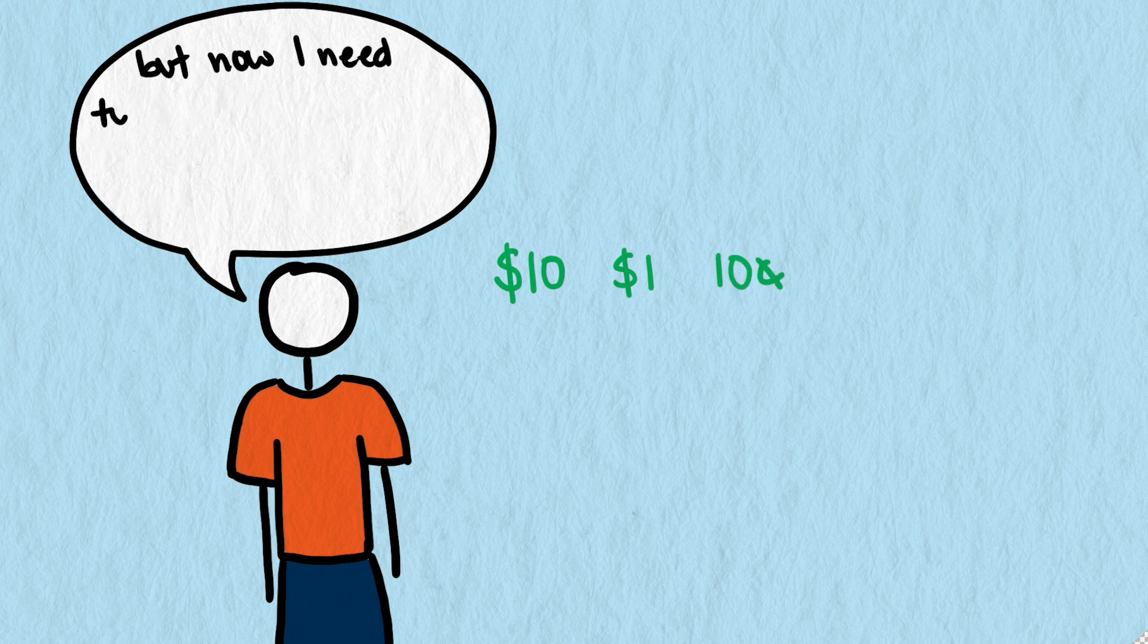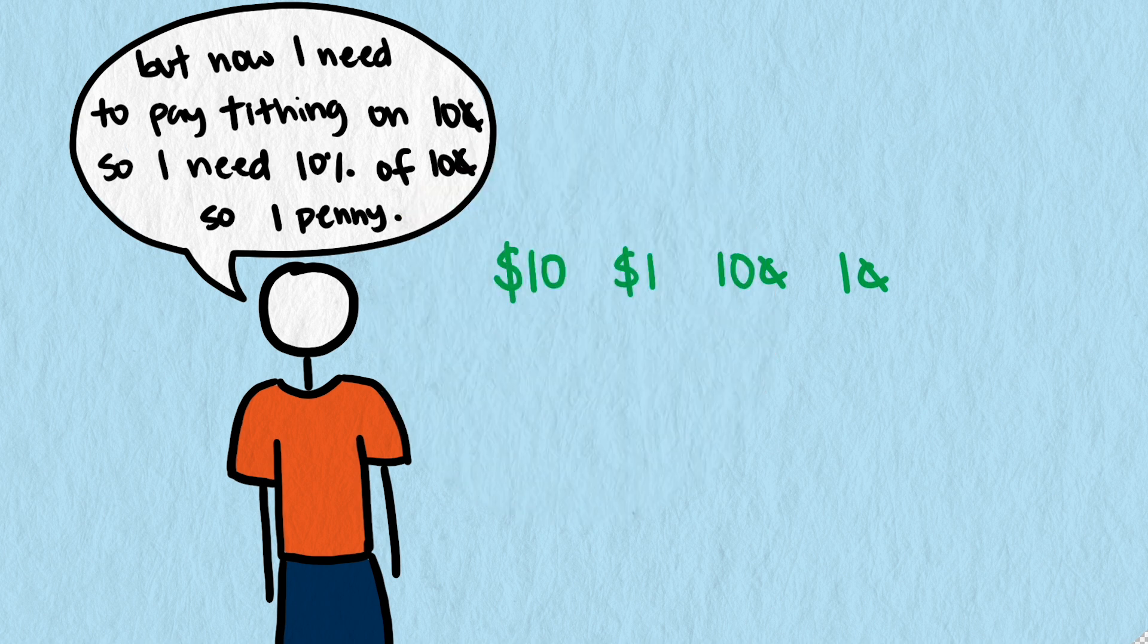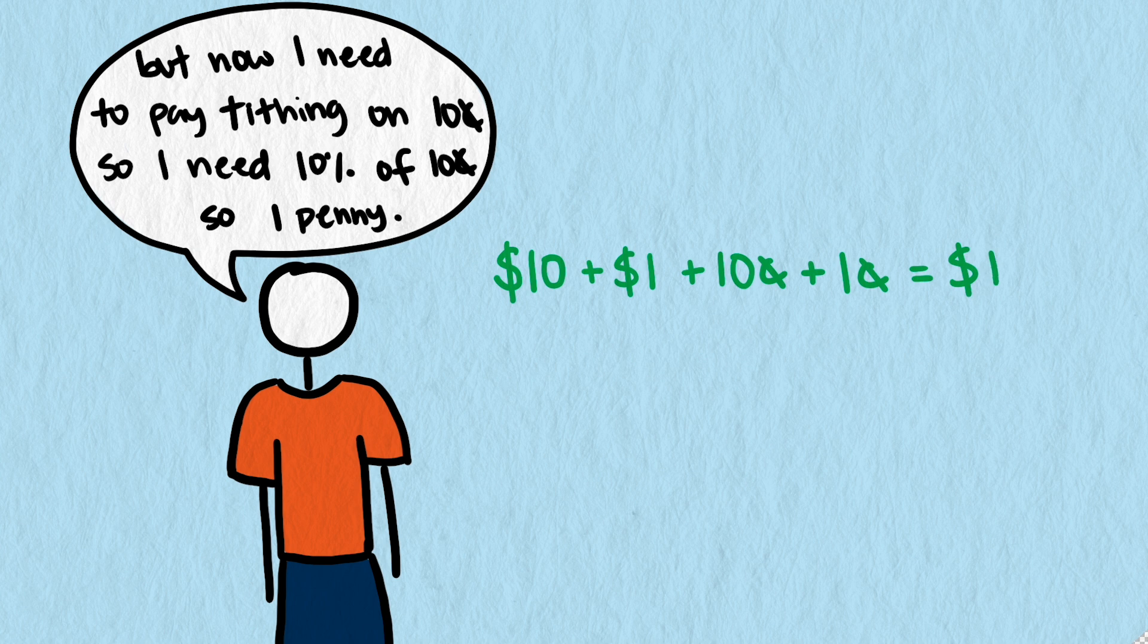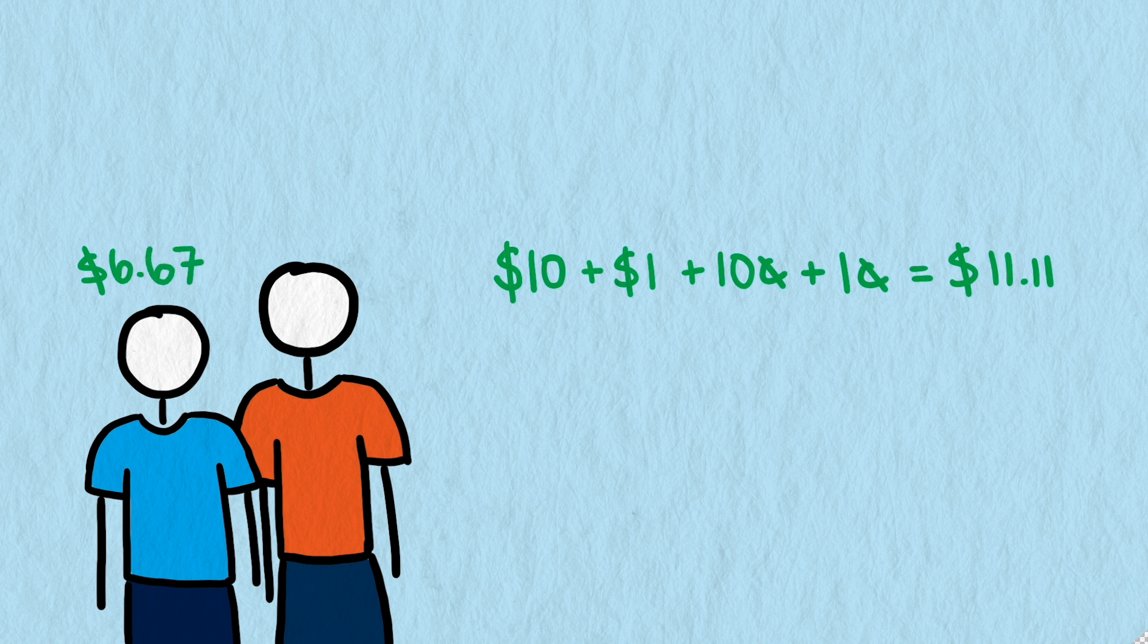But now I need to pay tithing on 10 cents, so I need 10% of 10 cents, so I need a penny. And since our currency doesn't use half pennies anymore, we can stop there. So my son ended up with a bid of $11.11. The one that started with $6 did the same thing, but rounded up at the end to get $6.67.